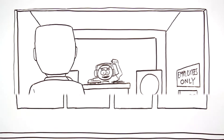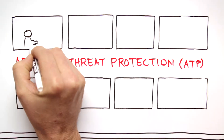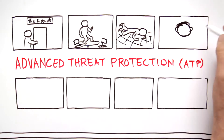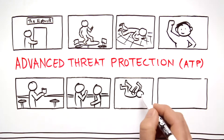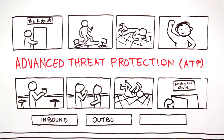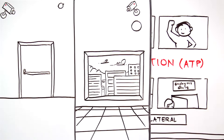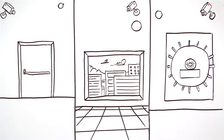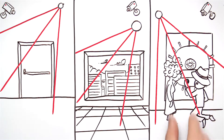Trend Micro Tipping Point Advanced Threat Protection monitors all your ports and over 100 protocols to identify unknown threats and suspicious objects that are not only moving inbound and outbound, but also laterally across your network. It's like a system of cameras and sensors monitoring all doors, windows, and internal activities to keep you secure.